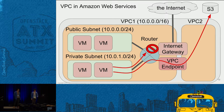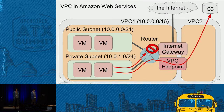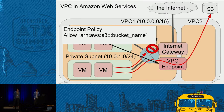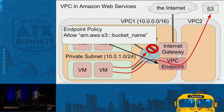The VPC endpoint enables users to access S3 from the private subnet. It provides a route only to the S3 API endpoint. The VPC endpoint also provides a very useful feature: endpoint policy. By applying endpoint policy, we can restrict access through the VPC endpoint to specified buckets. A bucket is the equivalent term for a container in Swift.